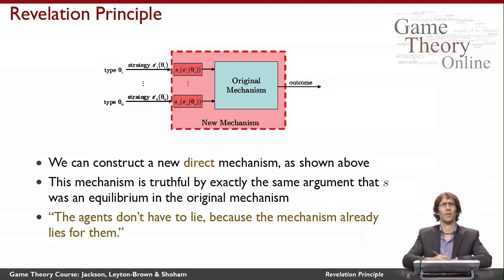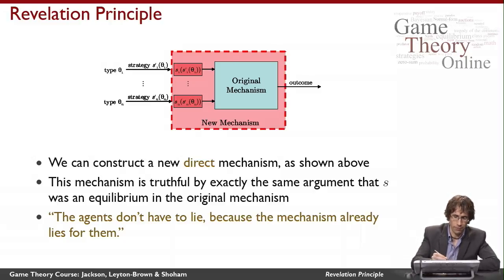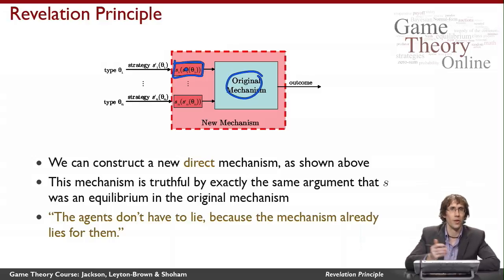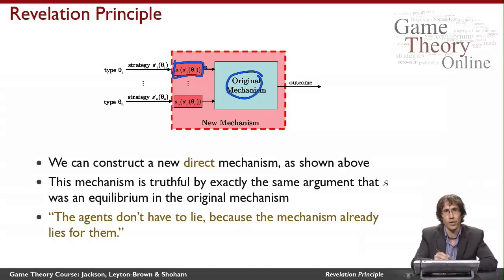The slogan for the Revelation Principle is that agents don't need to lie in this new mechanism because the mechanism already lies for them. We don't feed their real types into the original mechanism — we already apply the strategy of their types just as they were doing before. Given that the mechanism does such a good job of lying for me in exactly the way I would have wanted to lie, there's no reason for me to lie again. The mechanism acts as my proxy, doing just what I would like to do — so I should tell it the right thing.